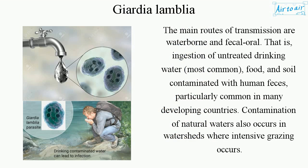The main routes of transmission are waterborne and fecal-oral — that is, ingestion of untreated drinking water, contaminated food, and soil contaminated with human feces, particularly common in many developing countries. Contamination of natural waters also occurs in watersheds where intensive grazing occurs.